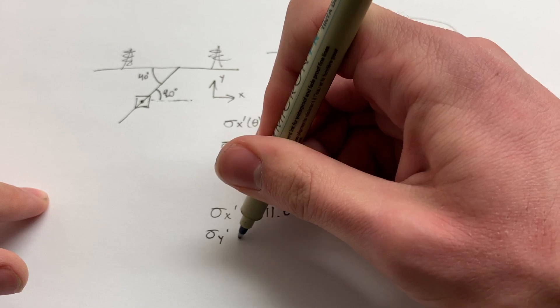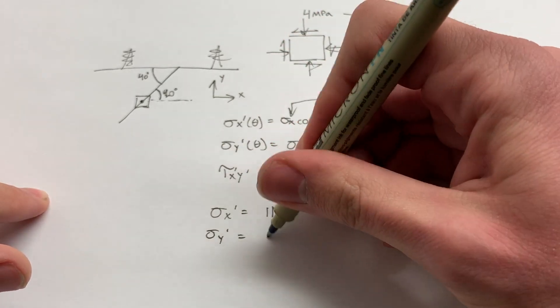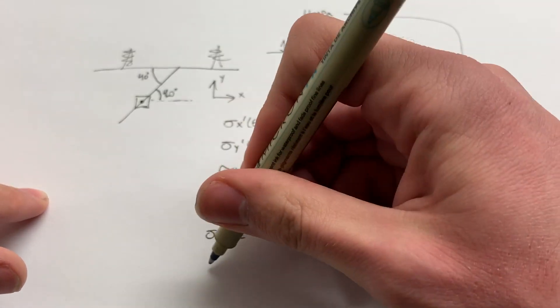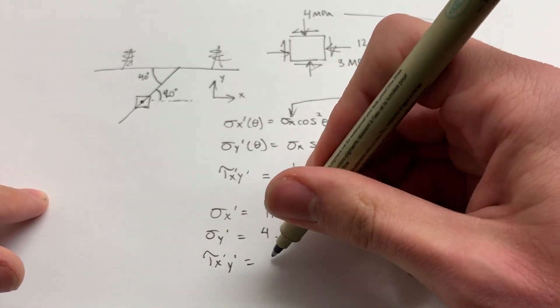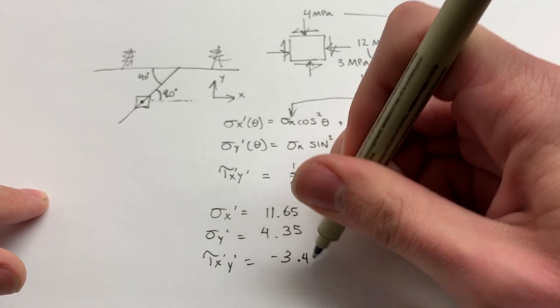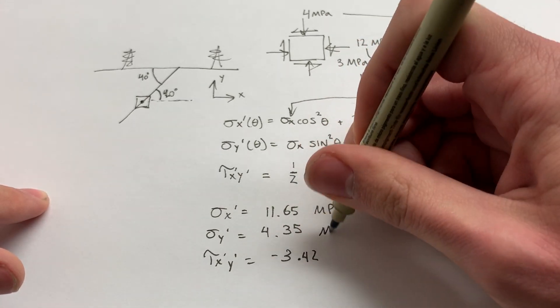Sigma Y prime is going to be 4.35. And tau X prime Y prime is going to be negative 3.42. And of course, all of these are still megapascals.